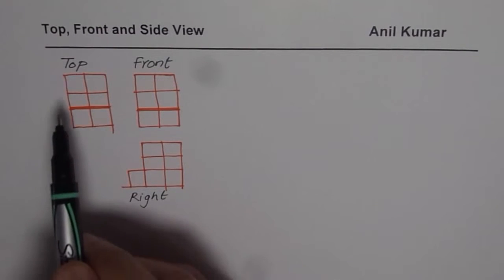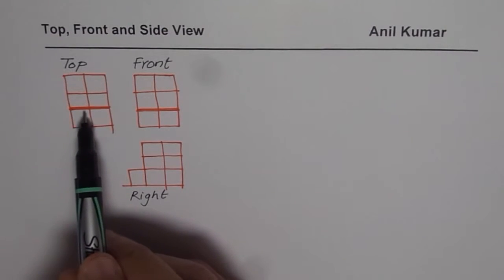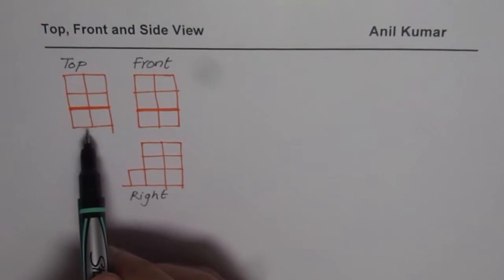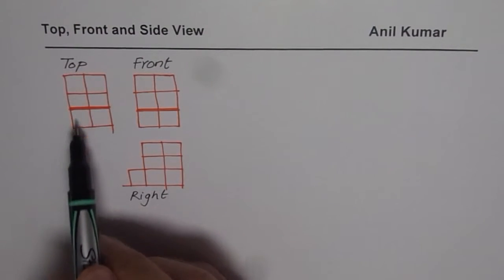The top view shows four different squares with a step there. So from the top you see six squares, six cubes I should say.